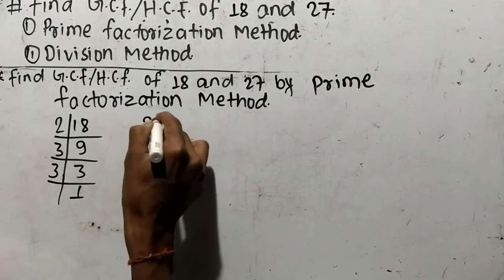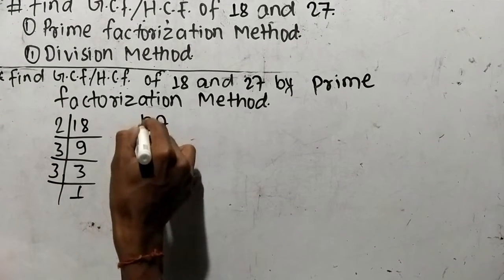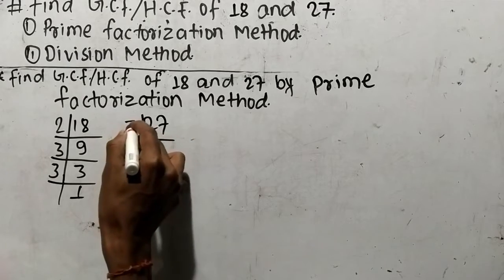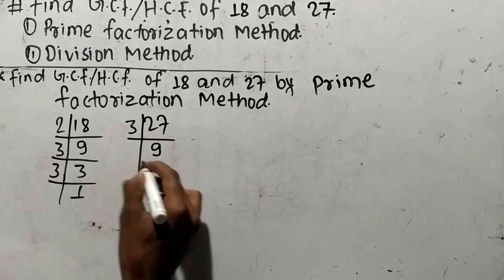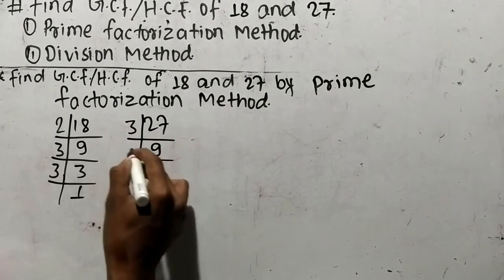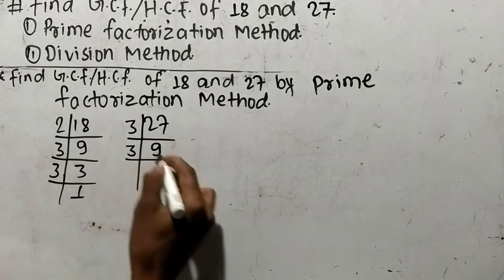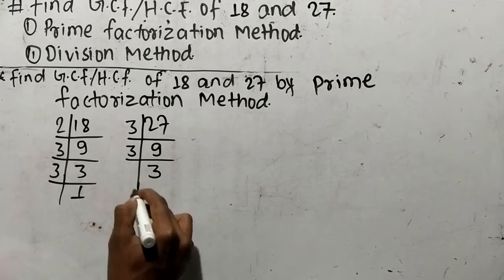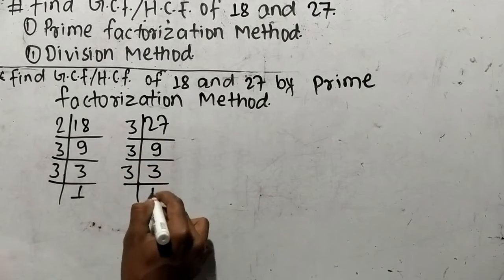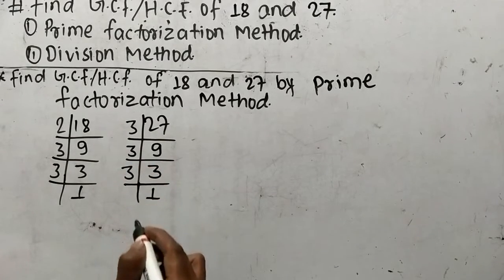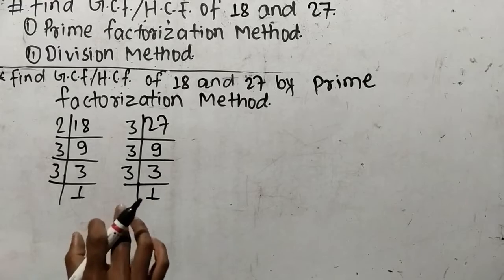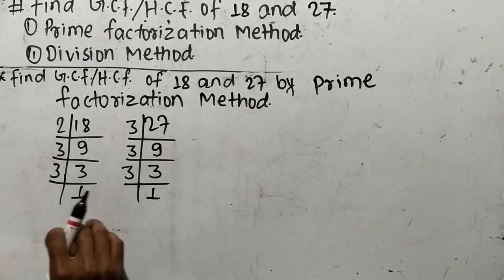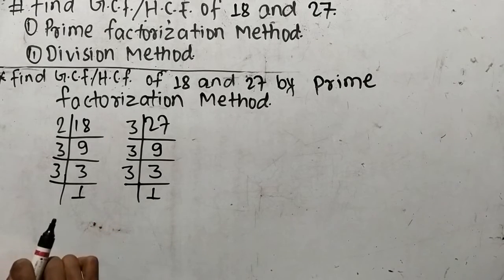In the same way we shall find out the prime factors of 27. It is 3 times 9, which equals 27, then 3 times 3 equals 9, and 3 times 1 equals 3. So we have found out the prime factors of both 18 and 27.